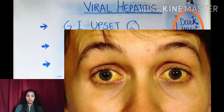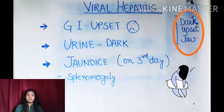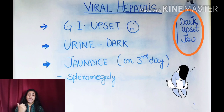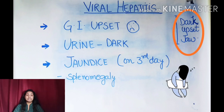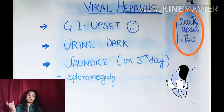So when we are doing the differential diagnosis, we have to see: dark urine, GI upset, and jaundice. The associated features will be splenomegaly and hepatomegaly. But the major complaint, when we have these three features of the triad, will lead us to diagnose viral hepatitis. For hepatomegaly, we will palpate and confirm it, but the major complaint will guide the treatment.